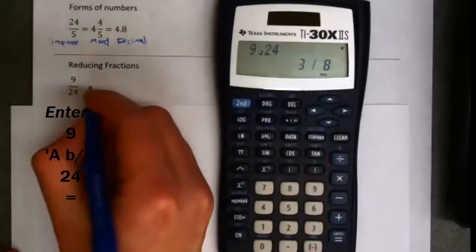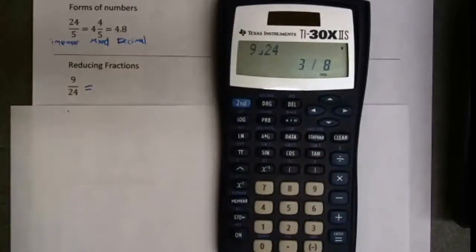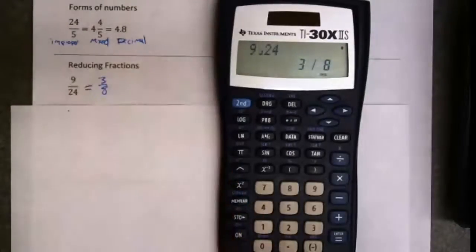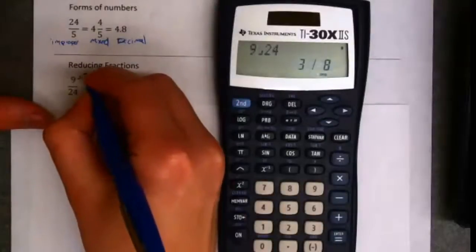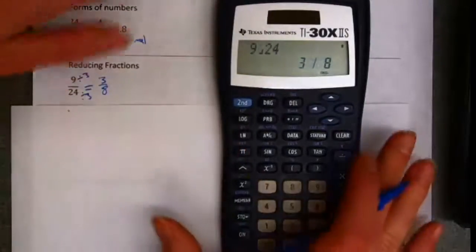And you'll see that it doesn't display 9 24ths. It actually displays 3 8ths, because that is the reduced form of this fraction. Now like I said, you should have been able to work that one out without the benefit of a calculator. Both of those values are divisible by 3. That's how we'd reach 3 8ths without a calculator.